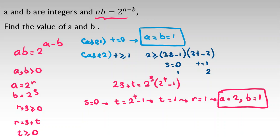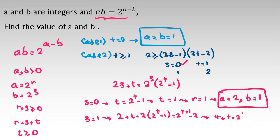For S=1: the equation becomes 2 plus T equals 2 times 2 to the T minus 1, which simplifies to 4 plus T equals 2 to the T plus 1. Checking T=2 gives 6 vs 8, and for T=4 it's 8 vs 16 — the right side grows faster, so no solutions exist for S=1.